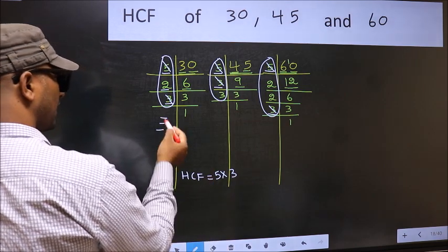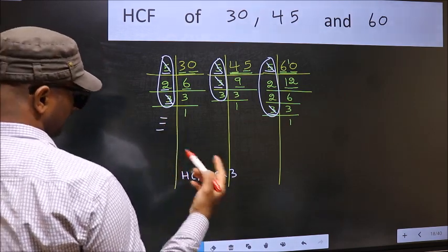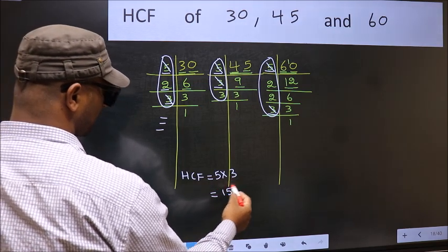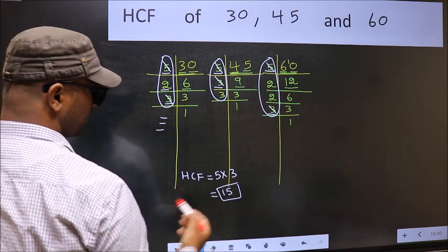No more numbers have been left out. Therefore, our HCF is 5 into 3, 15. 15 is our HCF. Thank you.